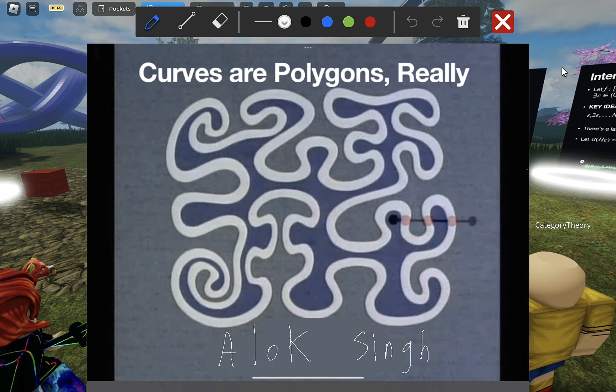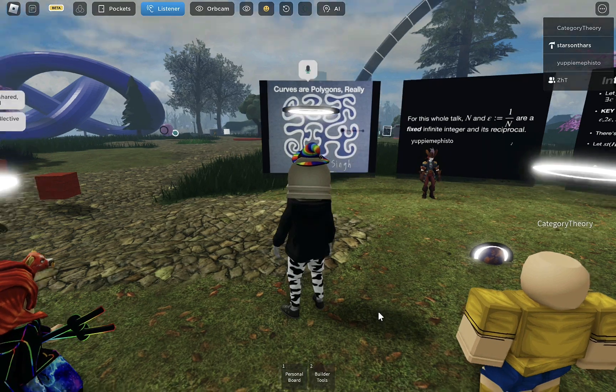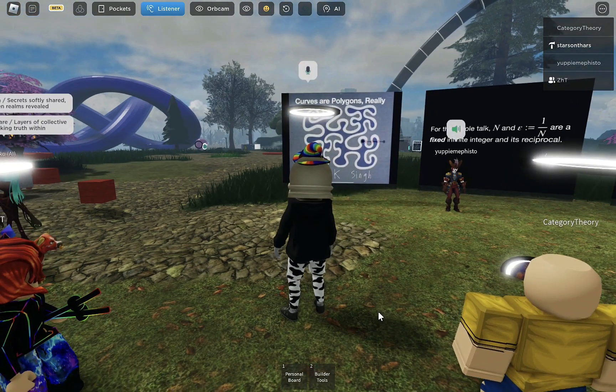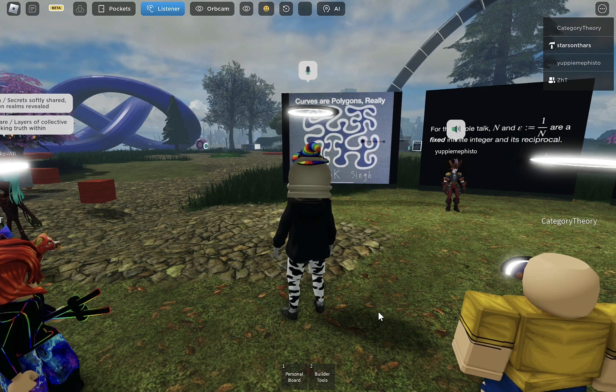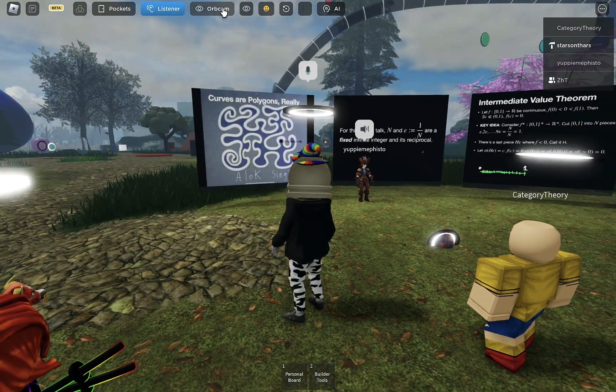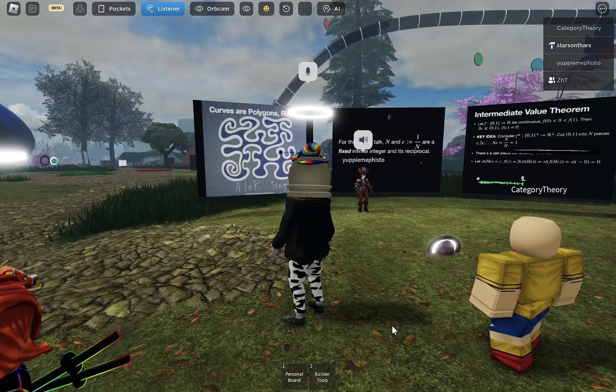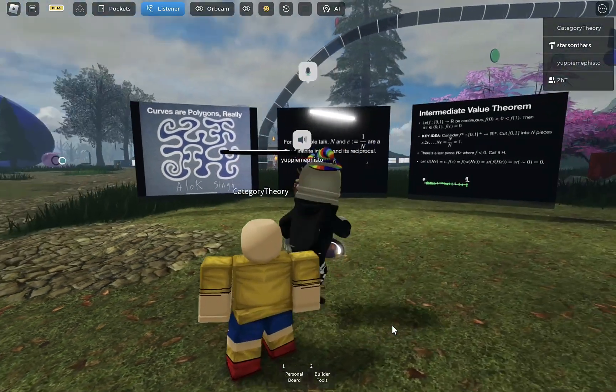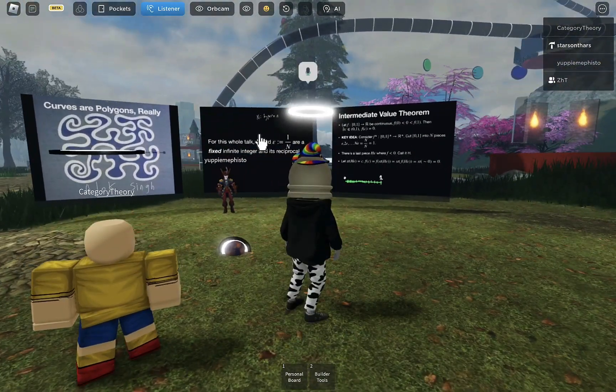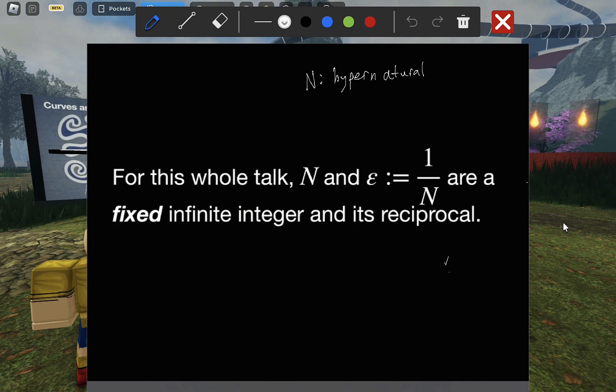And we're going to start with a nice and simple one. As in the last talk, N is going to denote a specific fixed infinitely large integer, also called hyperinteger, or rather hypernatural, which has the property of being unlimited, larger than one, two, three, and any standard number.